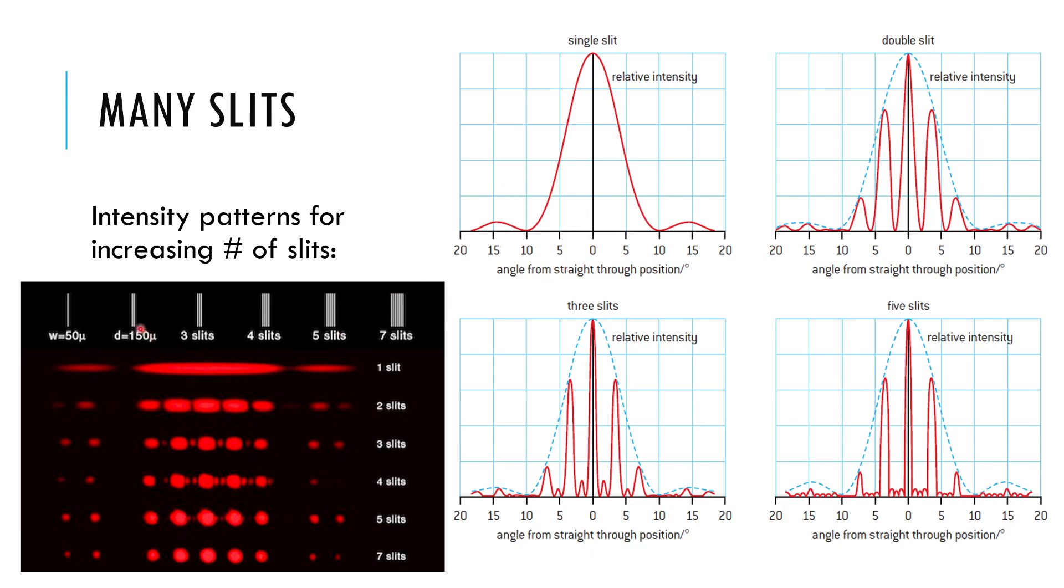Once we start adding more slits, though, things get exciting because now we add two source or multiple source interference to the diffraction pattern. And so the double slit pattern is, of course, the two source interference pattern modulated, we say, by the single slit envelope. The two source interference happens inside of here.